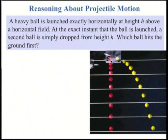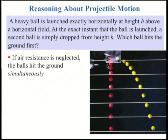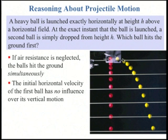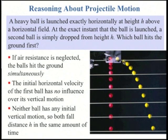So let's look at this situation. We have an apparatus that releases two balls at the same instant. The first ball is simply dropped from some height, and the second ball, the yellow one, is fired in a horizontal direction. It has the 0y component of its velocity, but it's going towards the right. Which ball hits the ground first? Well, it turns out if air resistance is neglected, the balls hit the ground simultaneously. The initial horizontal velocity here has no influence on the vertical component of the ball's motion. Neither ball has any initial vertical motion, so both fall a distance h in the same amount of time.